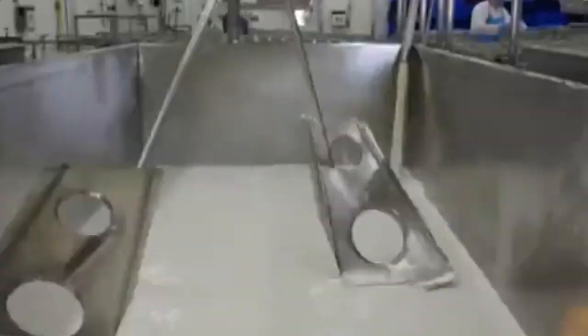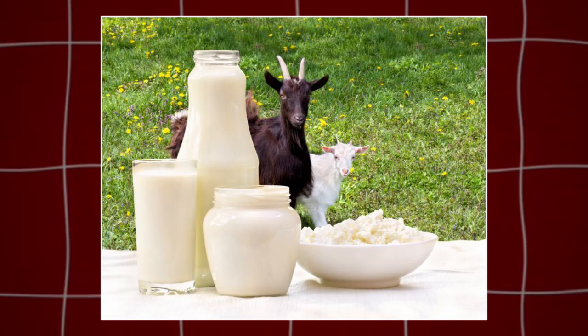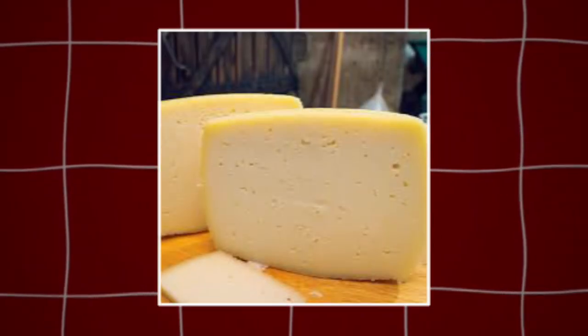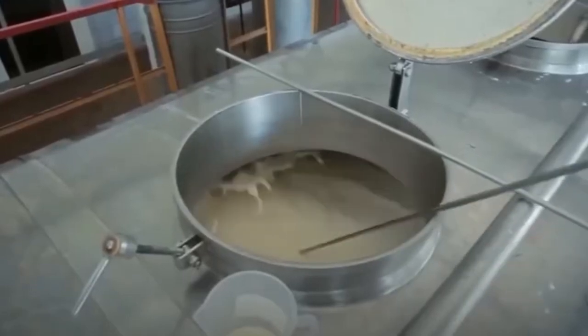Cheese can be made from different kinds of milk, such as cow's milk, which is the most common and is used for cheeses like cheddar, gouda, and swiss. Goat's milk has a strong, tangy taste and is used for many soft cheeses. Sheep's milk is creamy and rich, used in cheeses like feta and pecorino. Blended milk is a mix of different milks to create new and unique flavors. Every type of milk gives the cheese a different taste and texture.